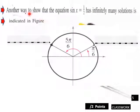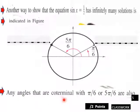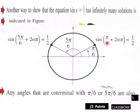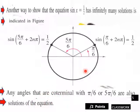Another way to show that the equation sine x equals 1 half has infinitely many solutions is indicated with a unit circle. This is your angle pi over 6, and this is your 5 pi over 6 angle over here. Any angles that are coterminal with pi over 6 or 5 pi over 6 are also solutions of the equation. So sine of 5 pi over 6 plus 2n pi equals 1 half, and the same for the other. You're in quadrant 1 and quadrant 2 with your solutions.